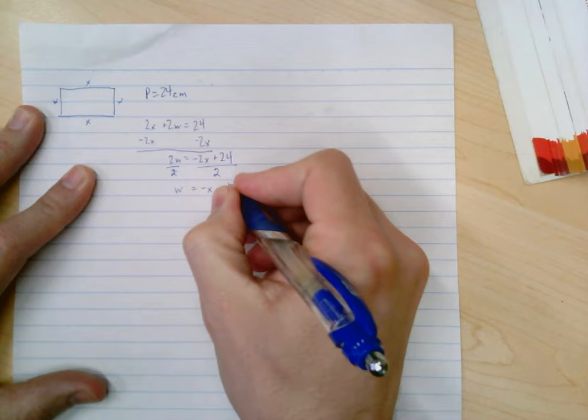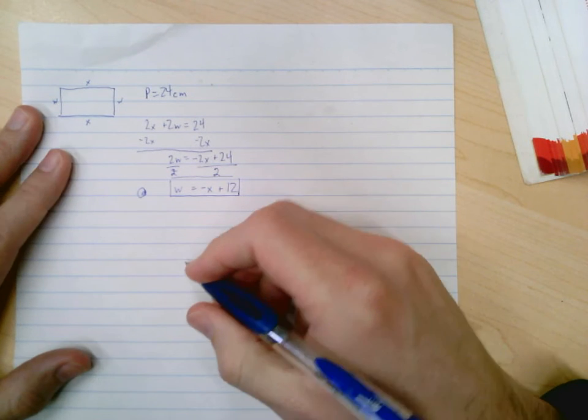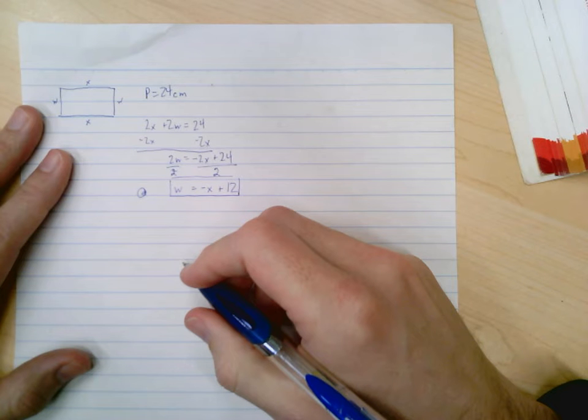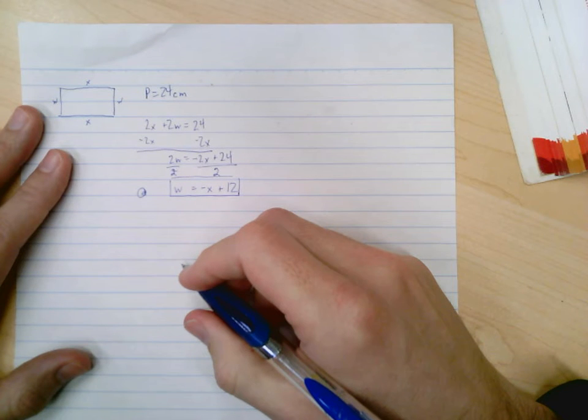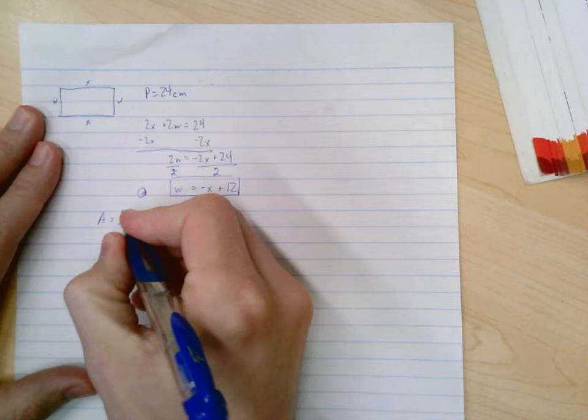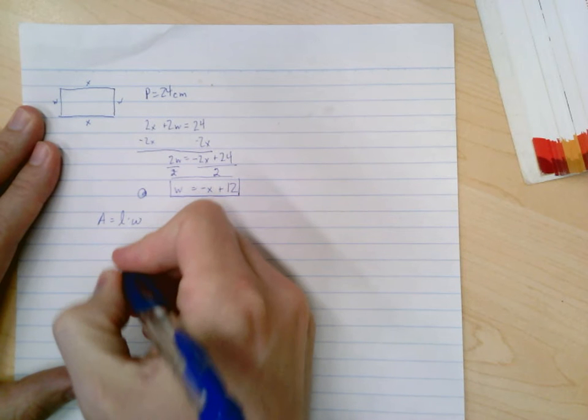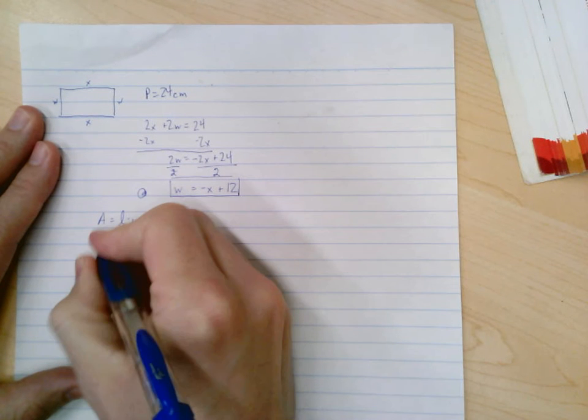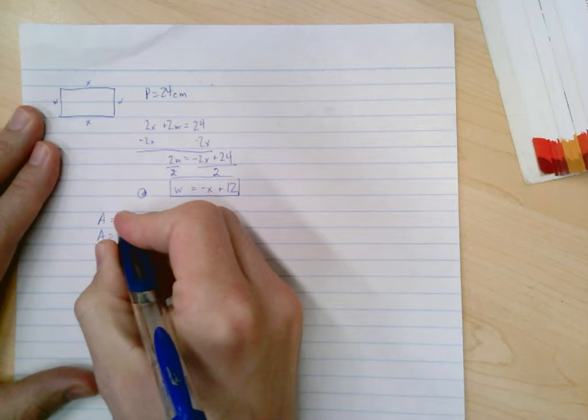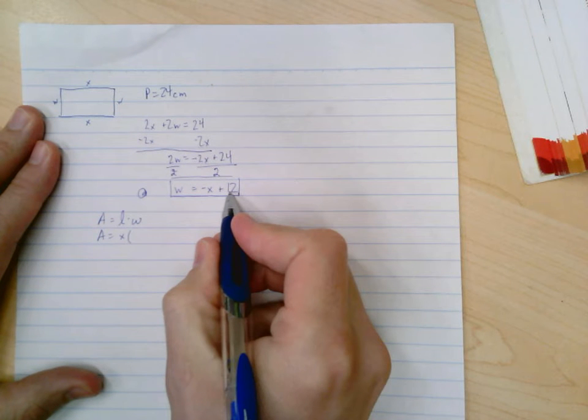Alright, the second question, part b, says find an expression for the area of the rectangle. Well, I know that area is equal to length times width. Well the length is x, that was given to me earlier. The width I just found in terms of x, so that's negative x plus 12 or 12 minus x, depending on how you wrote it. And so now I have a function for area that only depends on x. That was part b.